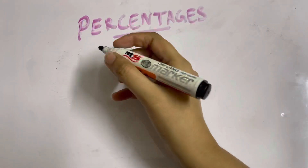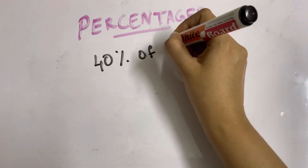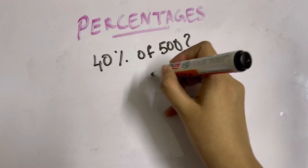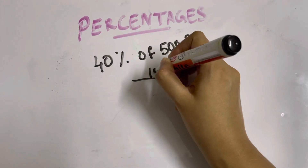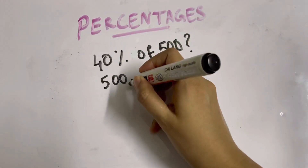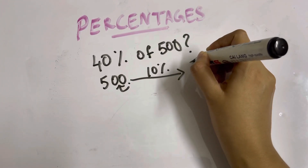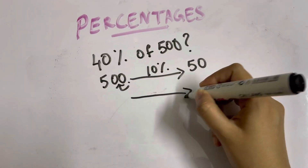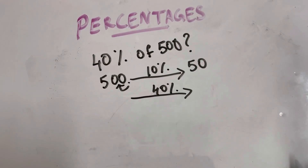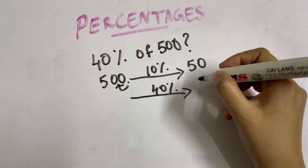Let's find out 40% of 500. Again, we start with 10%: take the decimal towards the right and move one slot towards the left, so 10% of 500 is 50. For 40%, it's just 4 multiplied by 10%, so 4 times 50 is 200. That's the answer.